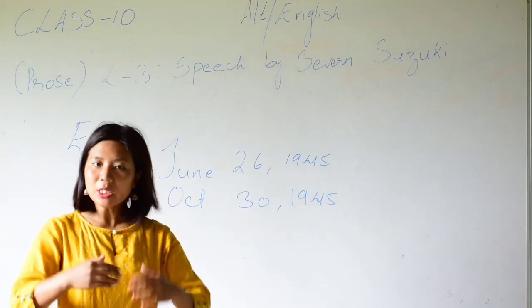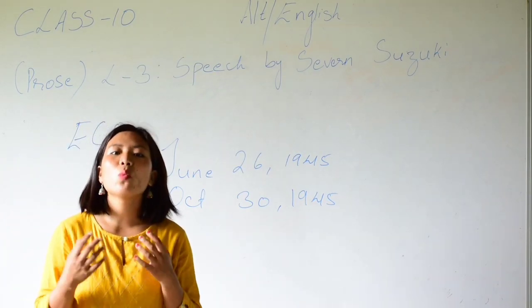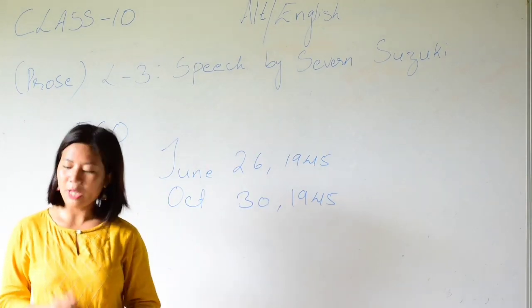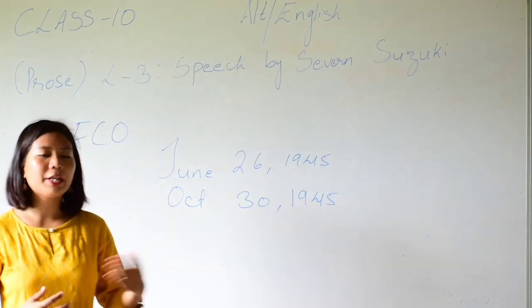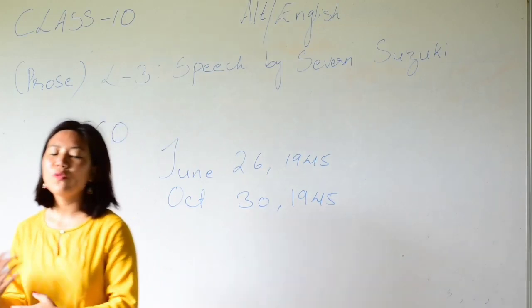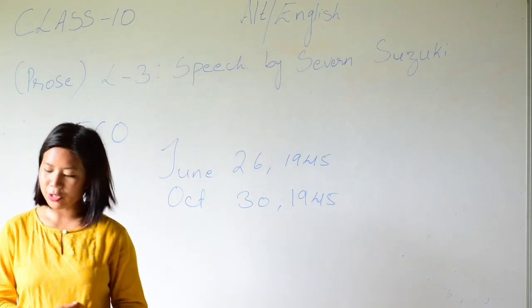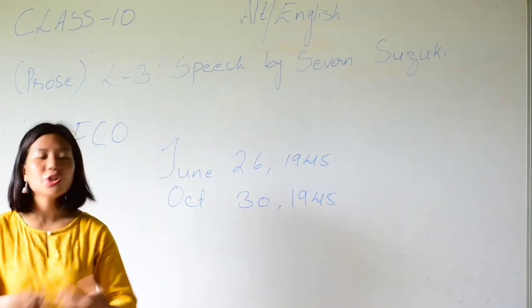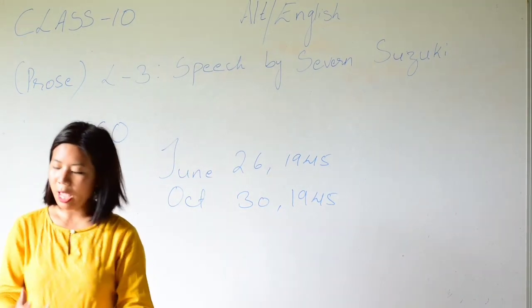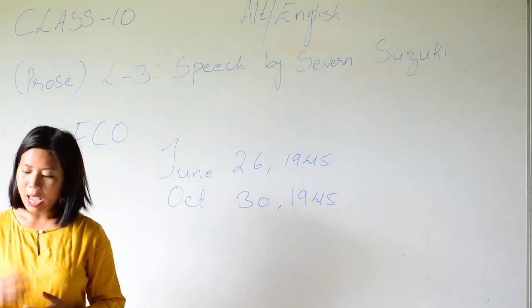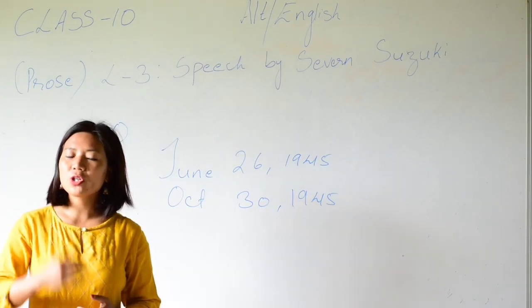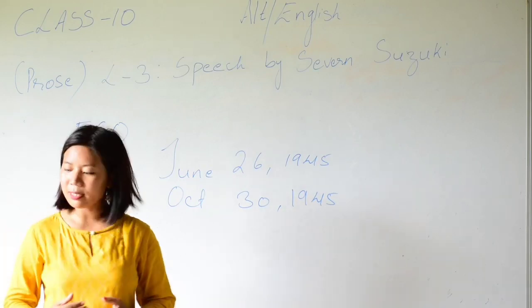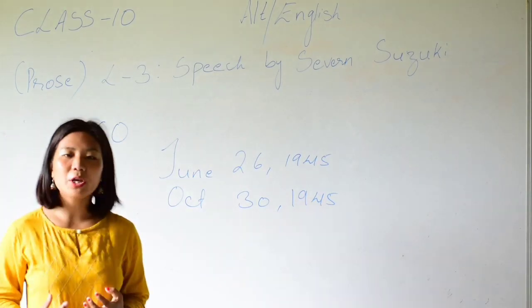Severn said that in kindergarten at school, they were taught by adults to behave well, not to fight, not to hurt other creatures, not to create problems, not to be greedy, but to share, work things out, and respect others. And then now she questions the adults present at the summit: why do they go out and do the things they tell kids not to do?